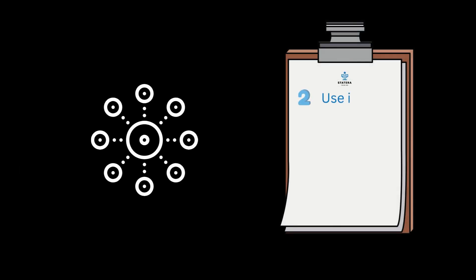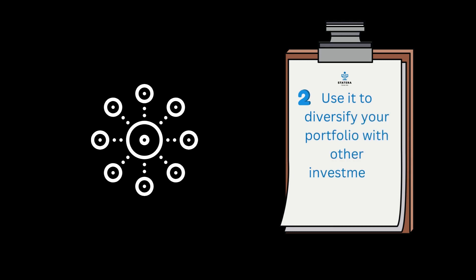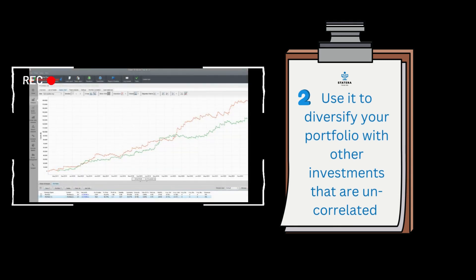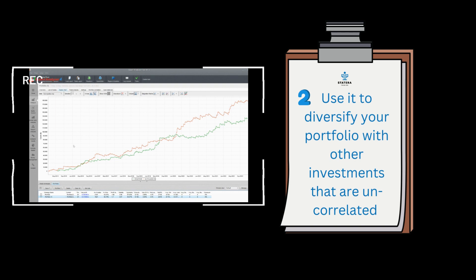Number two: use it to diversify your portfolio with other investments that are uncorrelated. The reason we say use it to diversify your portfolio — I'll give you an example from our own algorithm. You can see that on this chart there are two lines: the green one which indicates gold, and the orange one which indicates US dollar/Japanese yen.